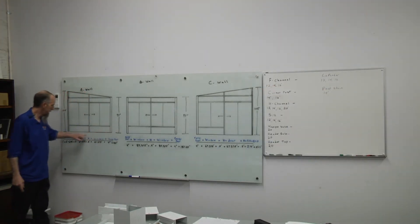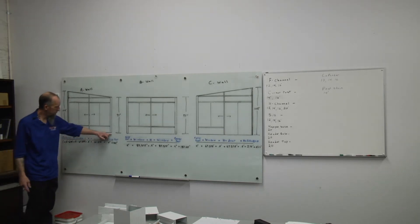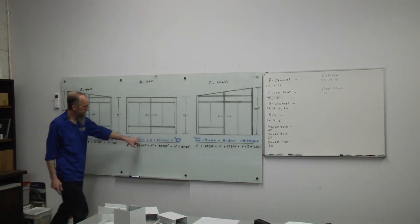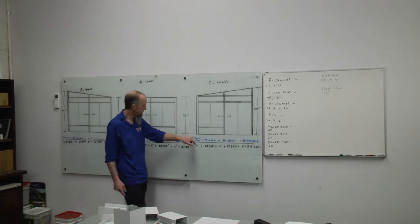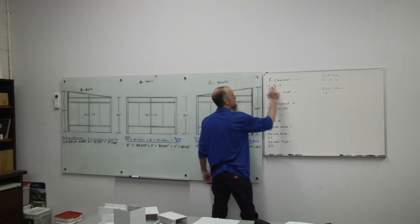Starting with our base tracks, our base F channel. We have 12 foot for our A wall. We have just under 16 foot for our B wall and 12 foot for C wall.